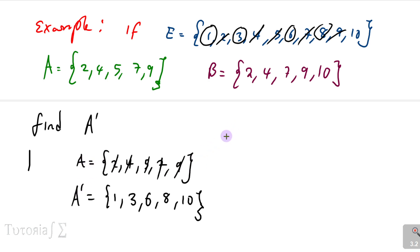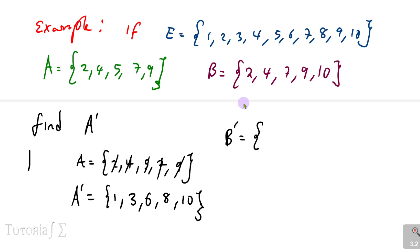The same applies — try B complement. B complement looks for elements outside B. We compare each element of the universal set with B.